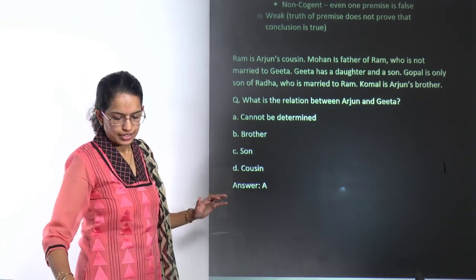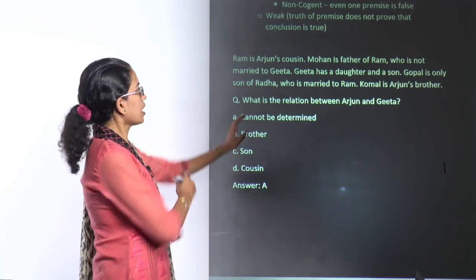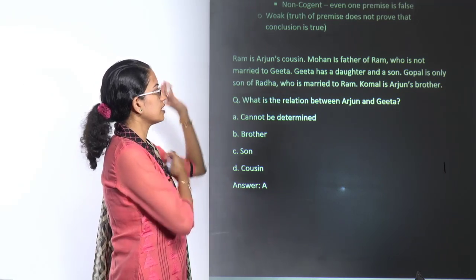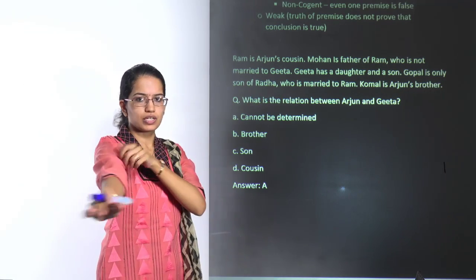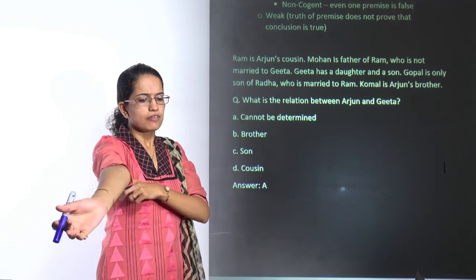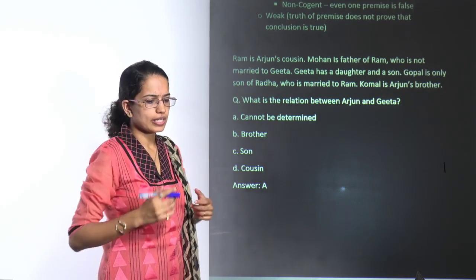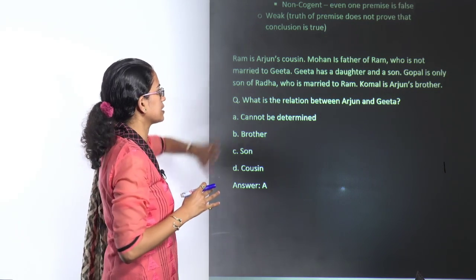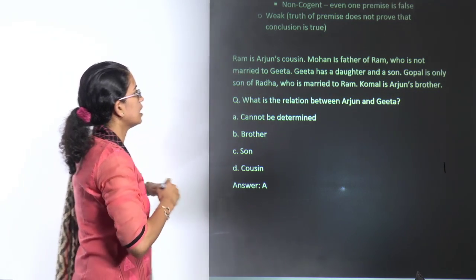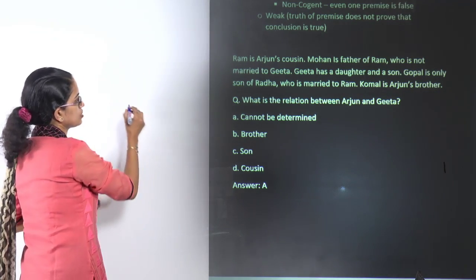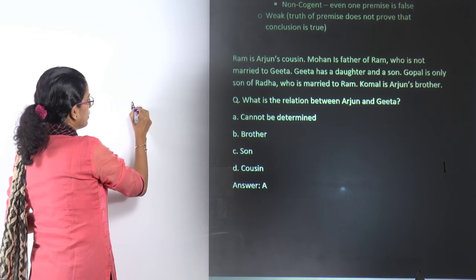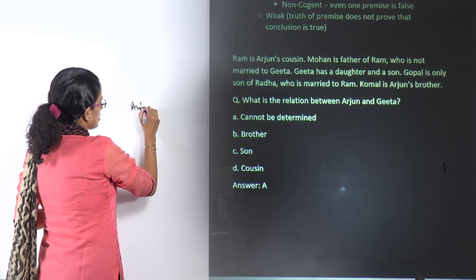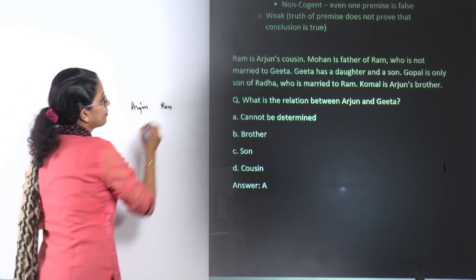The next question sent in is about blood relation problems — understanding the relationships given. Ram is Arjun's cousin. Let's say you have Arjun and you have Ram.